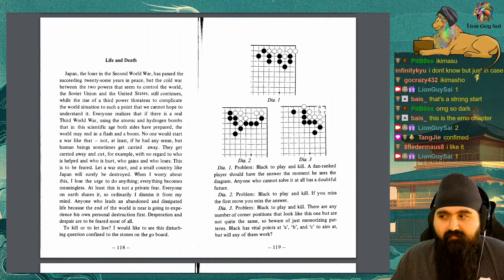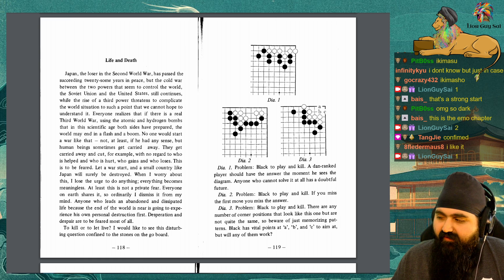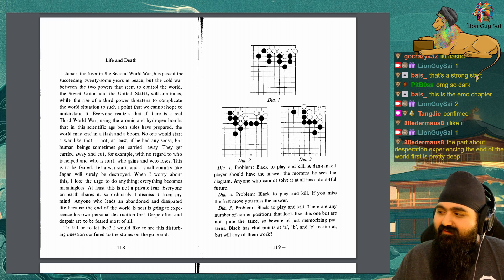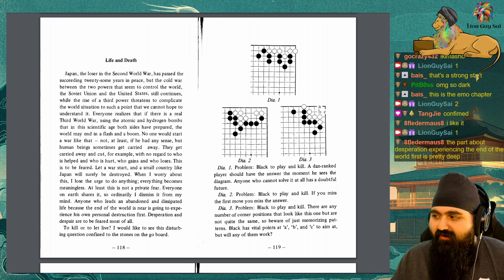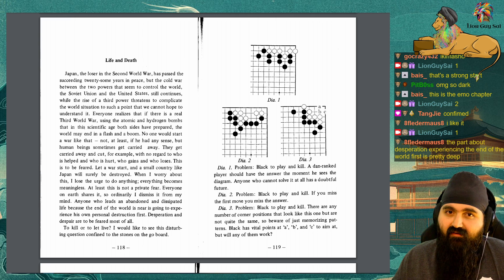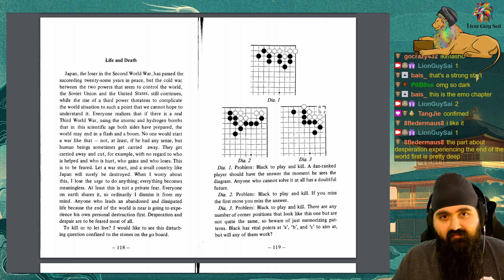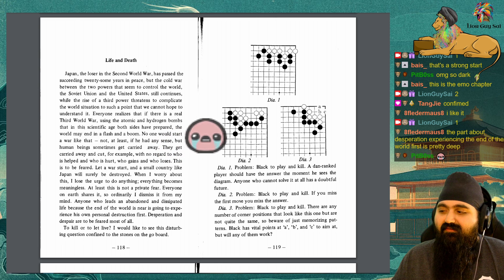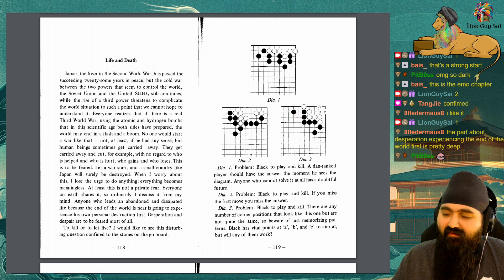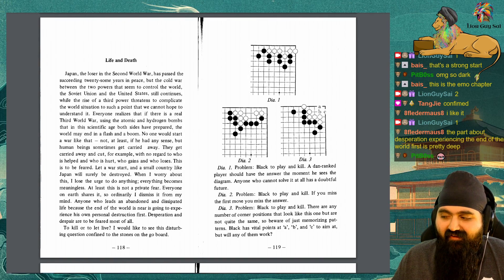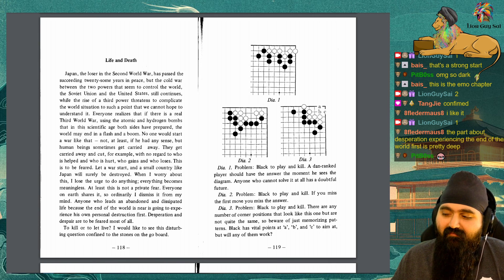Diagram 1, Problem: Black to play and kill. A dawn ranked player should have the answer the moment he sees the diagram. Anyone who cannot solve it at all has a doubtful future. Diagram 2, Problem: Black to play and kill. If you miss the first move, you miss the answer. Diagram 3, Problem: Black to play and kill. There are any number of corner positions that look like this one but are not quite the same, so be aware of just memorizing patterns. Black has vital points at A, B, and C to aim at, but will any of them work?